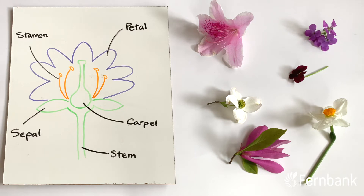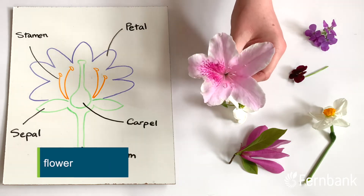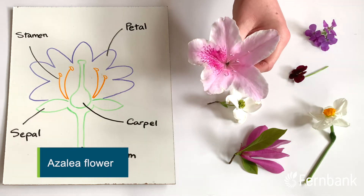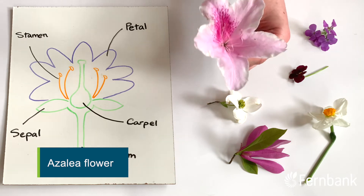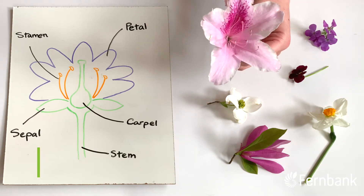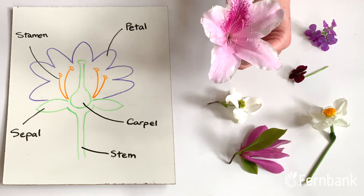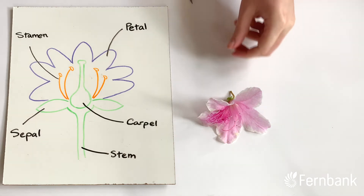Today we're going to be dissecting this azalea flower. We're going to be looking at all the different parts and learning what they do. So we're going to go ahead and take a look at the anatomy of our flower.